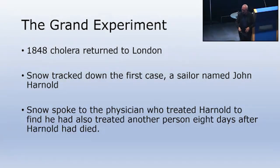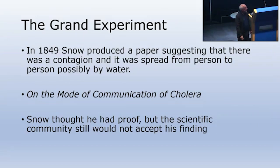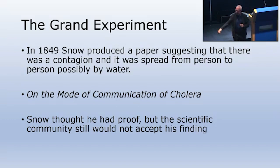When somebody is ill with cholera, what they pass out is essentially water — called rice water, a clear liquid. So somehow, because the sheets hadn't been changed, somebody else got infected. In 1849, Snow produced a paper suggesting a contagion spread from person to person via water. The publication was called 'On the Mode of Communication of Cholera.' Snow was careful not to tread on the toes of the miasma proponents; he tried to suggest it was like a water-based miasma initially, knowing that a young turk overturning years of well-established research would not be well received.